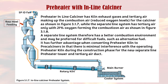The preheater and inline calciner uses both kiln exhaust gases and tertiary air as combustion air for the calciner, as shown in figure 3.1.7. The separate line system has tertiary air only with 21 percent oxygen forming the combustion air, as shown in figure 3.1.8. A separate line system therefore has a better combustion environment and may be preferred for difficult fuels such as alternative fuel. It has a further advantage when converting a preheater kiln to a precalciner, with minimal interference with the operating kiln during construction of the new separate line preheater tower and tertiary air duct.